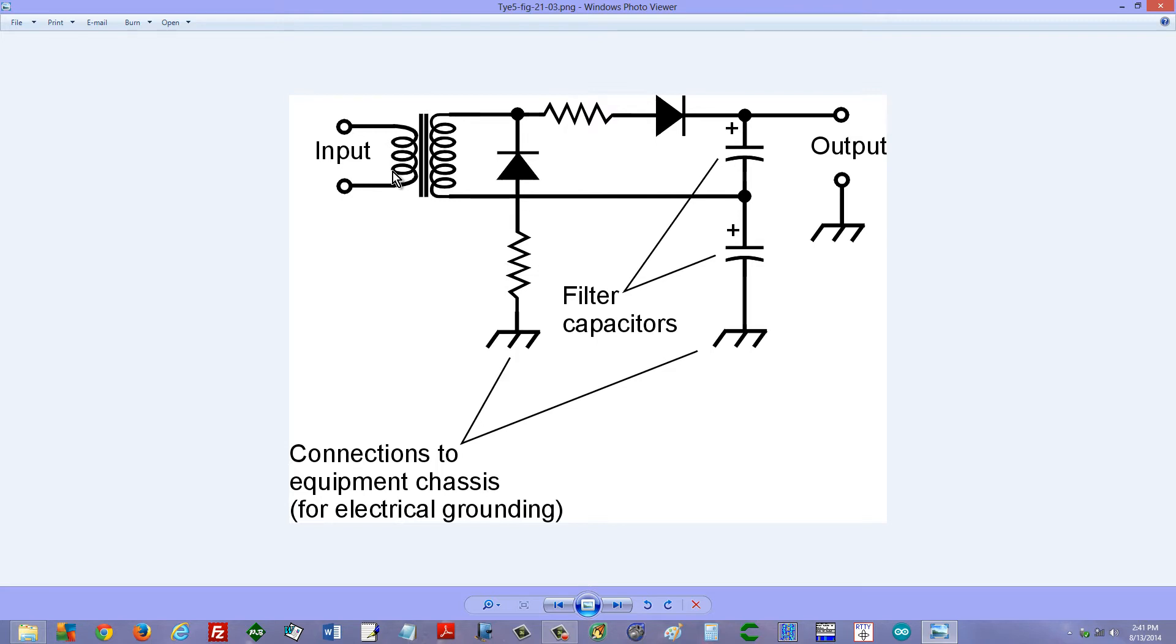Alternating current input, transformer, probably a step-up transformer, because if you're going to use a voltage doubler supply, you're probably going to want high voltage to begin with. Probably very high voltage.